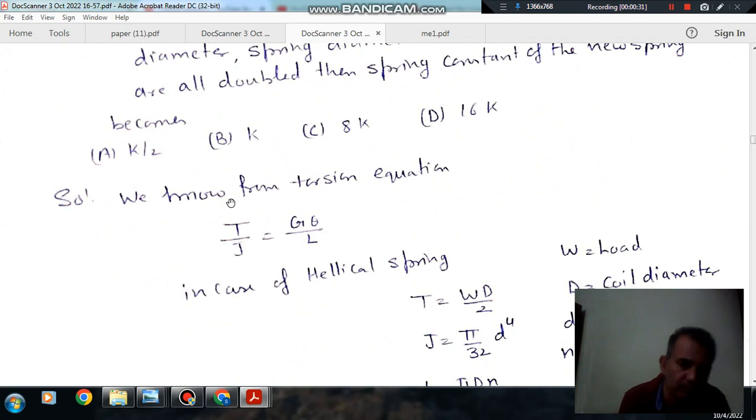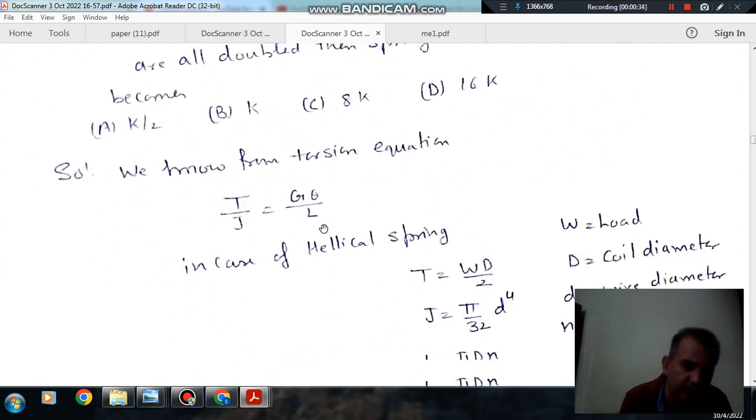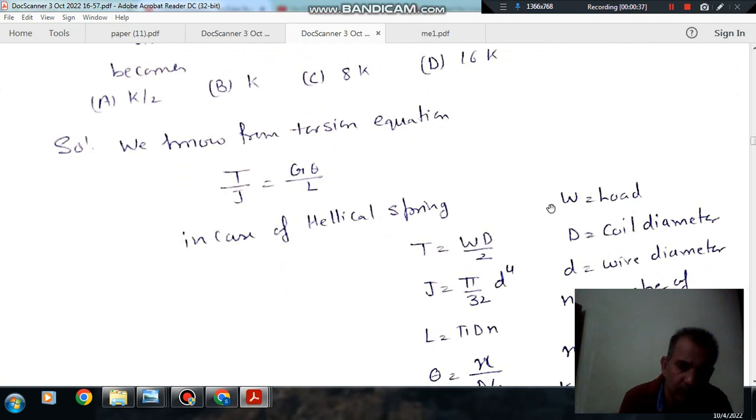So we know from torsion equation that T/J is equal to Gθ/L, where W is your load and D is your coil diameter of spring.